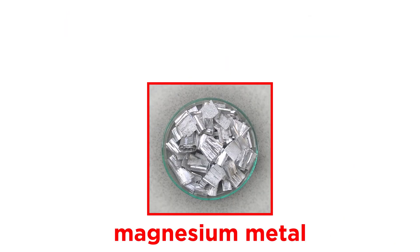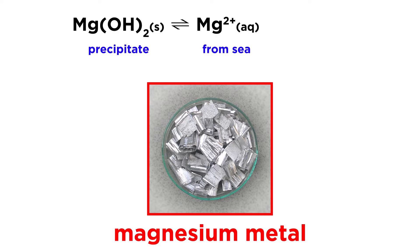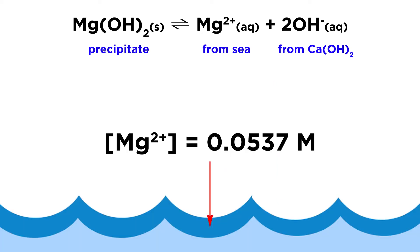For example, to prepare magnesium metal, we allow magnesium hydroxide to precipitate from seawater by adding calcium hydroxide to it. In a typical sample of seawater, the magnesium ion concentration is 0.0537 moles per liter, and let's say we want to find out if enough calcium hydroxide is added to give a hydroxide concentration of 0.001 molar, will magnesium hydroxide precipitate form, given that it has a Ksp of 2.1 times 10 to the negative 13.